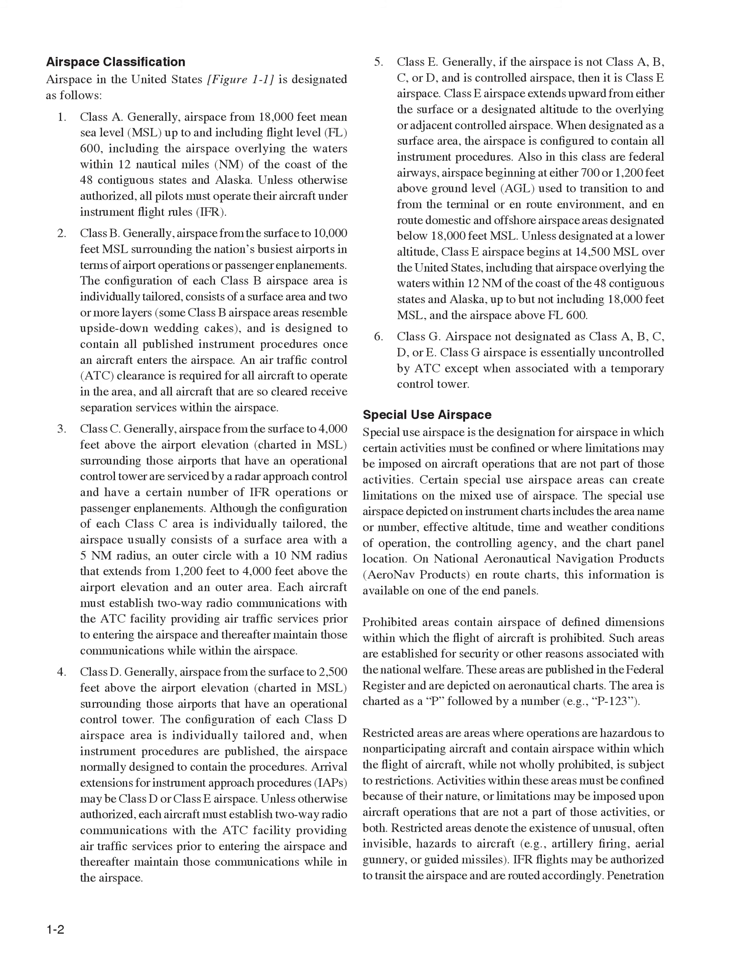Class E: generally, if the airspace is not Class A, B, C, or D, and is controlled airspace, then it is Class E airspace. Class E airspace extends upward from either the surface or a designated altitude to the overlying or adjacent controlled airspace. When designated as a surface area, the airspace is configured to contain all instrument procedures. Also in this class are Federal Airways, airspace beginning at either 700 or 1,200 feet above ground level, AGL, used to transition to and from the terminal or on-route environment, and on-route domestic and offshore airspace areas designated below 18,000 feet MSL. Unless designated at a lower altitude, Class E airspace begins at 14,500 MSL, including airspace overlying waters within 12 nautical miles of the coast of the 48 contiguous states and Alaska, up to but not including 18,000 feet MSL, and the airspace above FL-600.